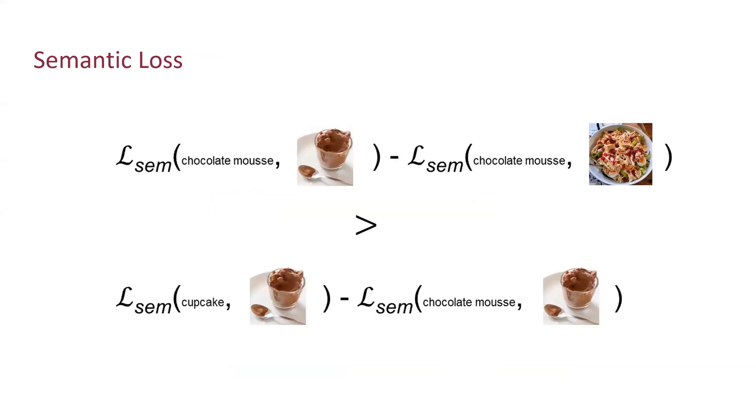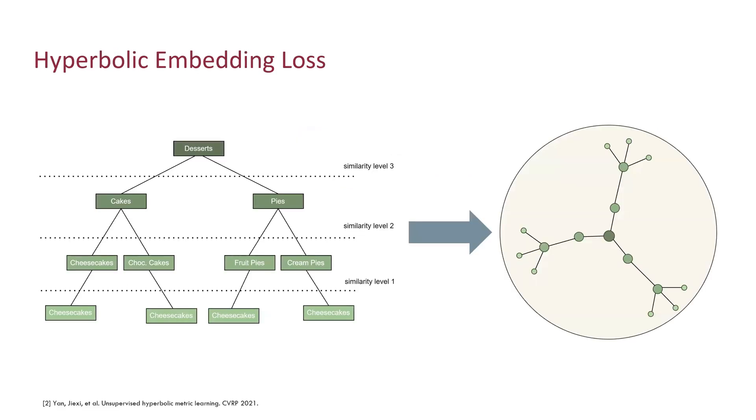To capture this information for the recipe categories, previous works often use the semantic loss. This loss is very similar to our image text contrastive loss, but the difference is that in semantic loss, the negative samples are chosen from different recipe classes, whereas in image text contrastive loss, the negatives may come from the same class. However, this loss still cannot fully encode the hierarchical structure.